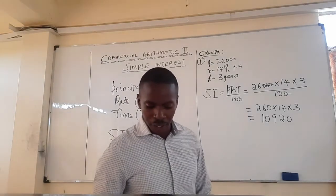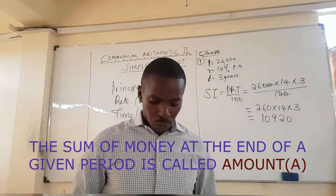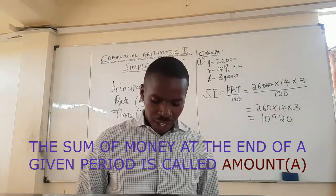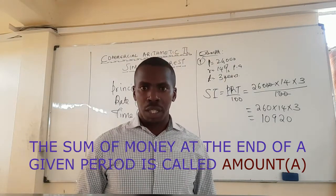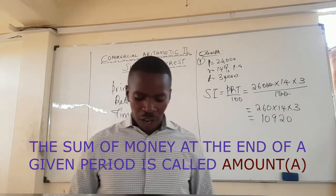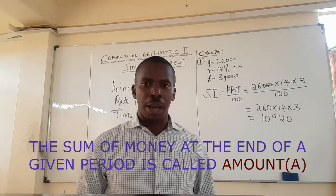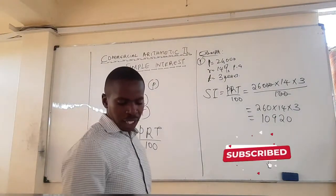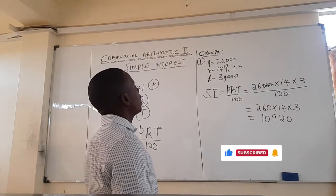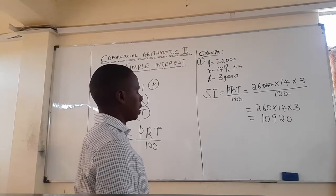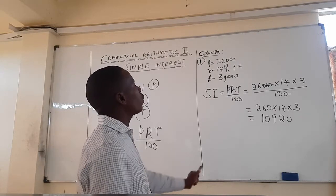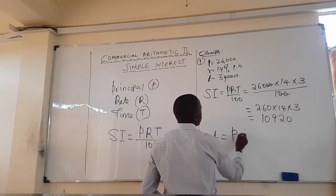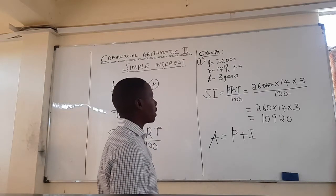There is something else you need to understand. The sum of money at the end of a given period of time is called the amount. In this scenario, the principal deposited was 26,000. At the end of three years we have an interest of 10,920. So the amount is given by principal plus interest.